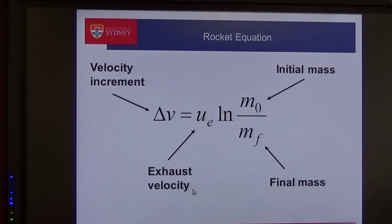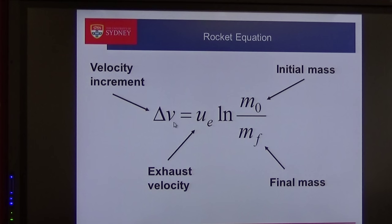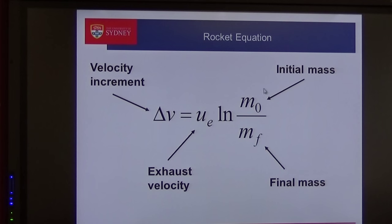Here's the rocket equation. I'll only put up two equations. The term on the left-hand side is the velocity increment — whatever velocity you have, you can increase it by a certain amount. On the right-hand side, you'll notice that the velocity increment depends linearly on the exhaust speed. The next term is the logarithm of the ratio between the initial mass of the whole spacecraft — including thruster, fuel, and payload — to the final mass. It's a very interesting equation and I'll show you why.